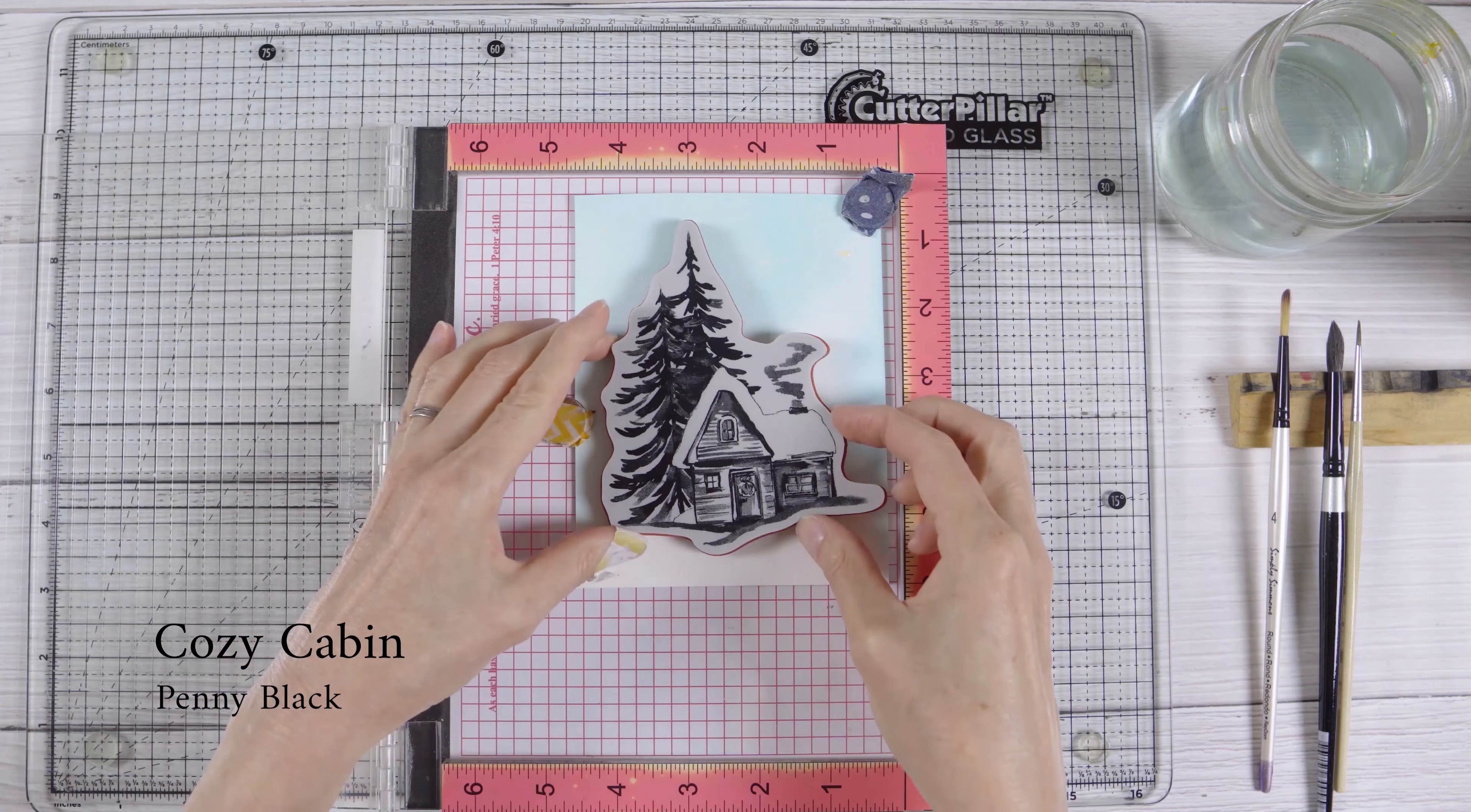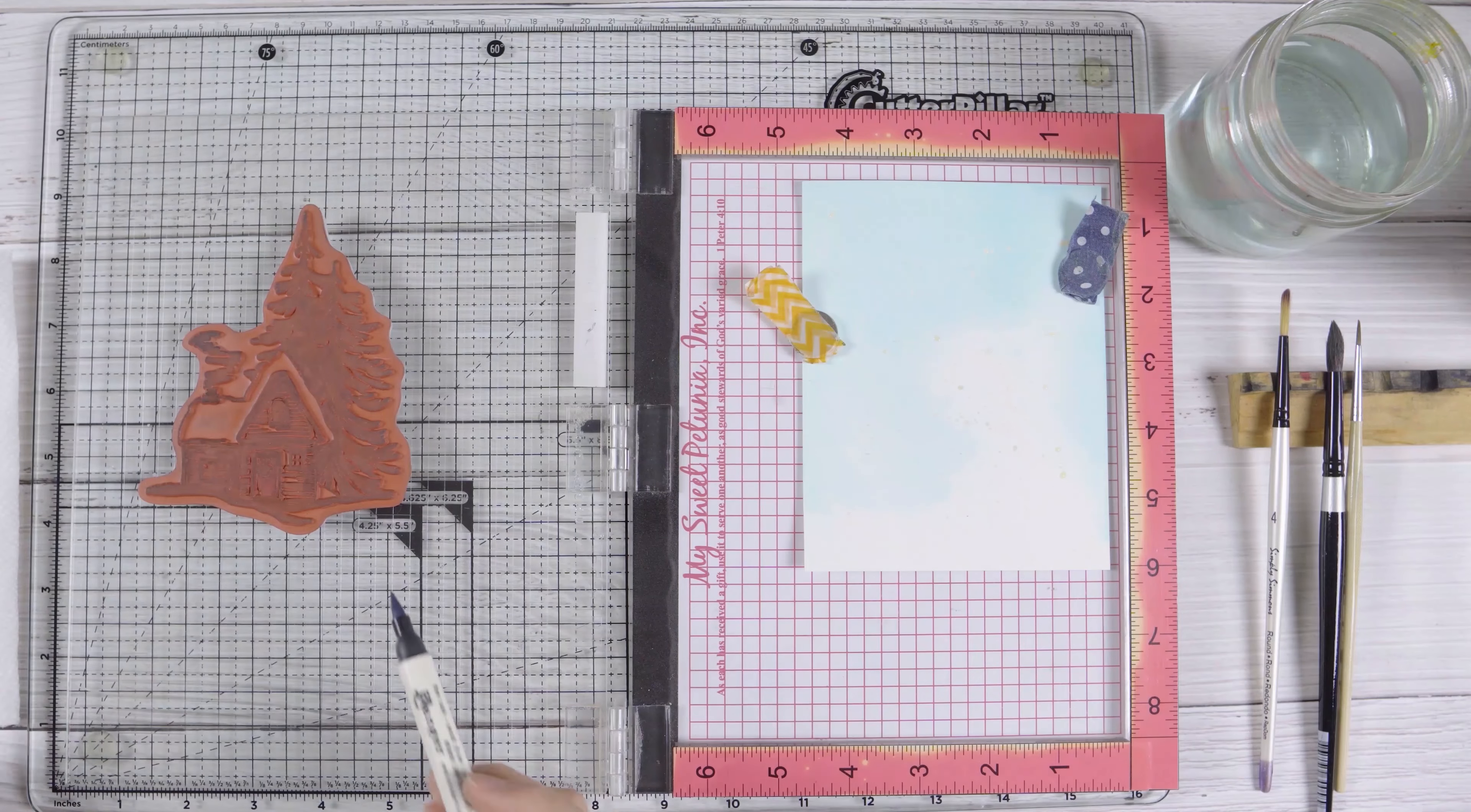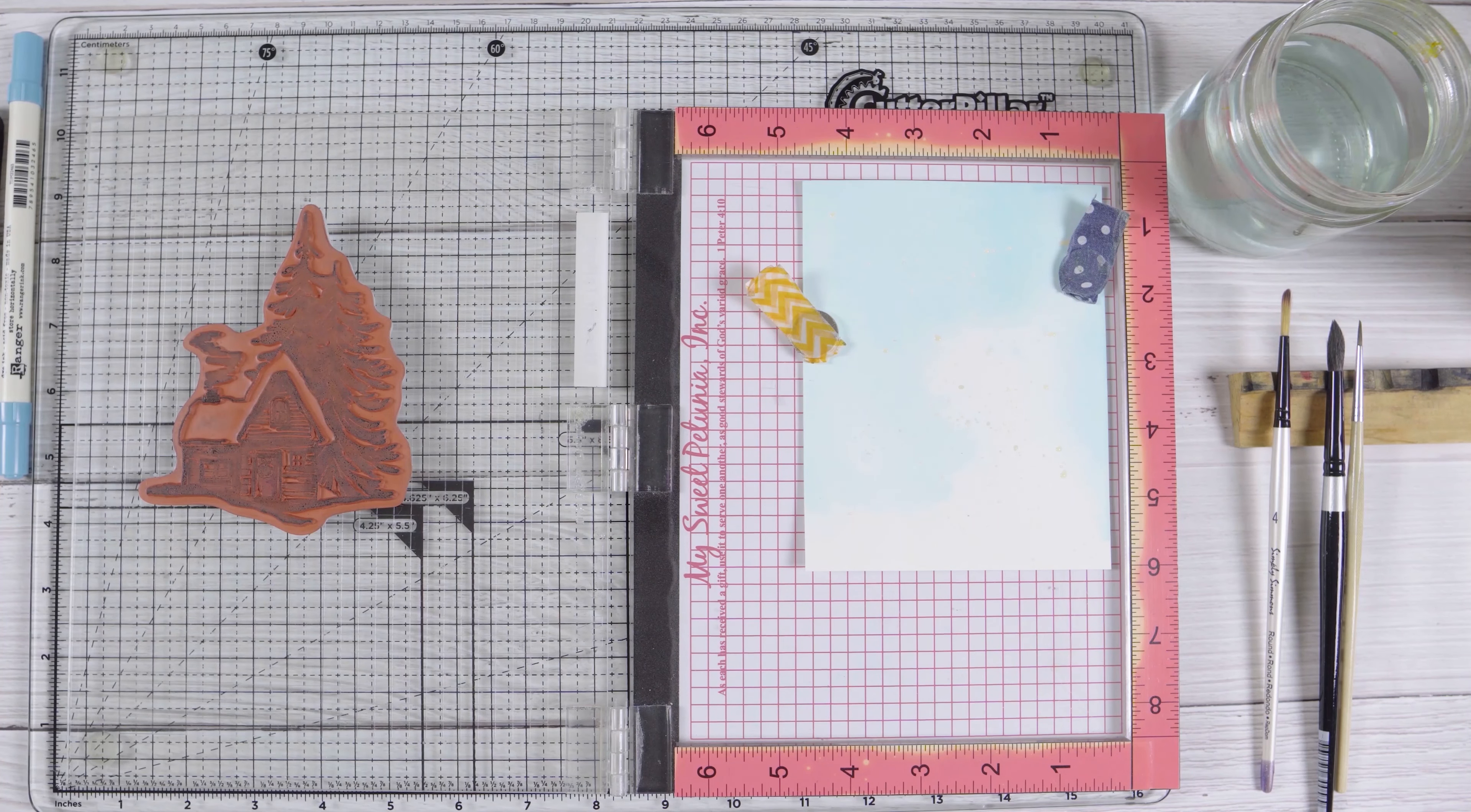The first thing I'm going to do is stamp the cottage part of the stamp in broken china ink. Broken china is a light blue and that's going to be similar to my light aqua sky. So I'm inking that snowy shadow at the base of the cabin and then I'm just using an ink pad to ink the rest of the stamp. I'm not worried about the trees at the moment, but I am removing the ink from the smoke that's coming out of the chimney.